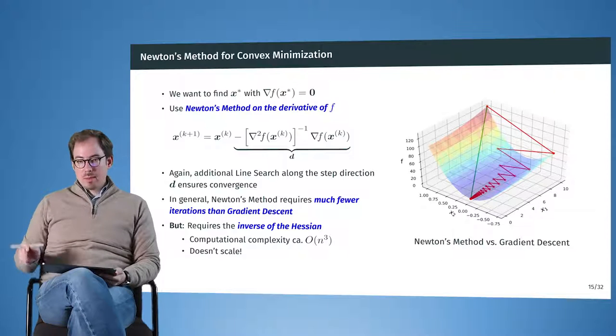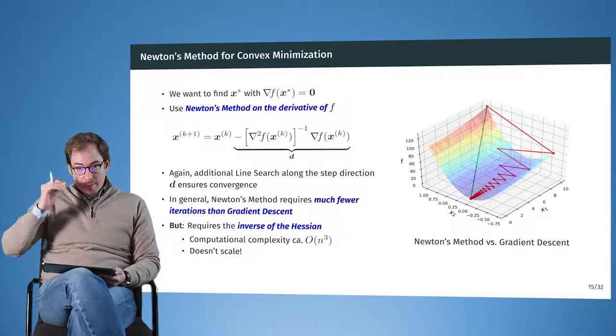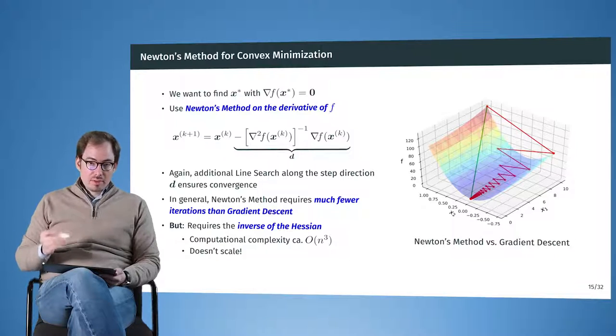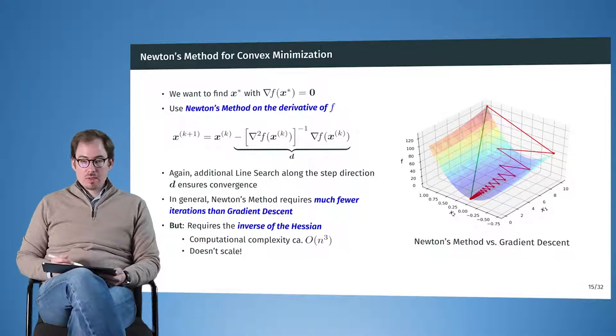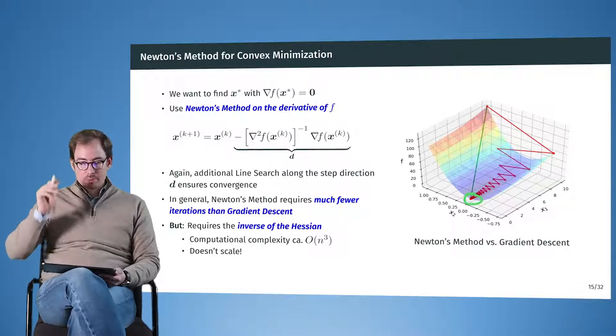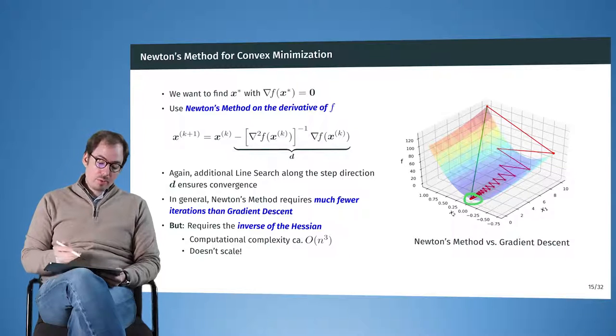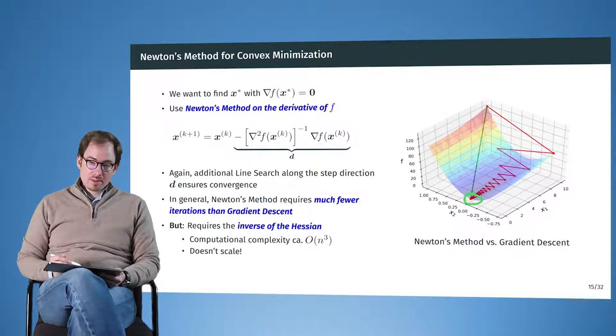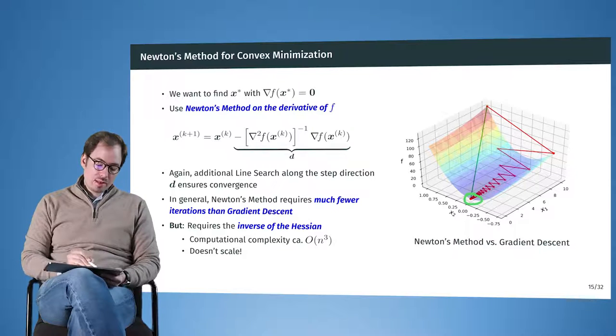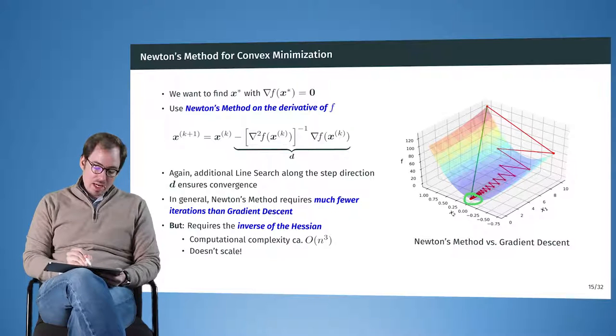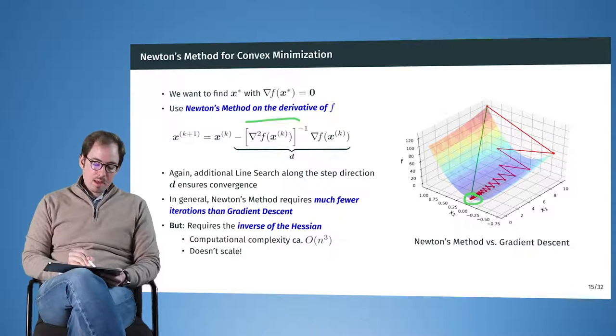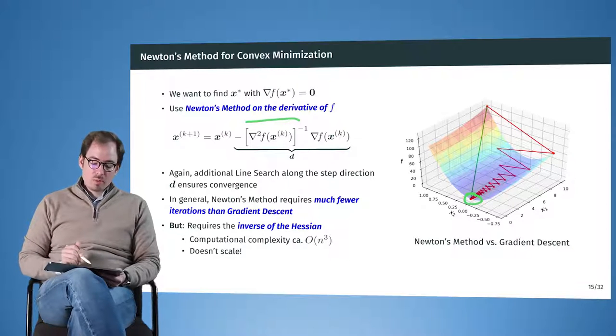And now what we do is we apply Newton's method to find the place where the derivative of the function that we want to minimize is zero. So we know that in the location where the minimizer is, the gradient is zero. And now we use Newton's method to get close to this point. And the formula you saw on the preceding slide is now a little bit more complicated. So now here we have taken the inverse of the Hessian at the current point.